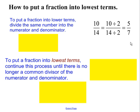In the first example, I start with 10 over 14. I'm going to divide 2 into the numerator and denominator, and I get an answer of 5 sevenths. Therefore, an equivalent form of 10 over 14 is equal to 5 over 7.